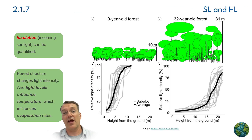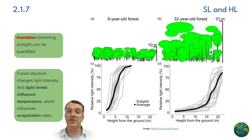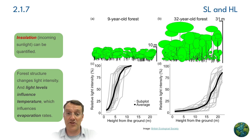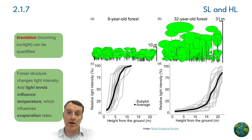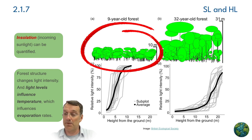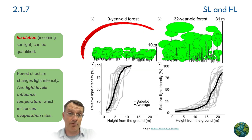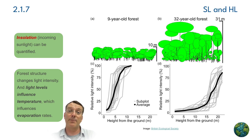In terrestrial ecosystems such as a forest, the forest structure influences light penetration, and light penetration affects temperature and evaporation rates beneath the forest canopy. In an area where there is less canopy, like a place that's just been cut recently where the trees haven't had the opportunity to grow and mature to their full size,